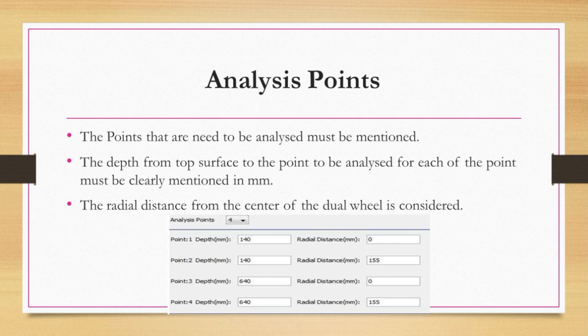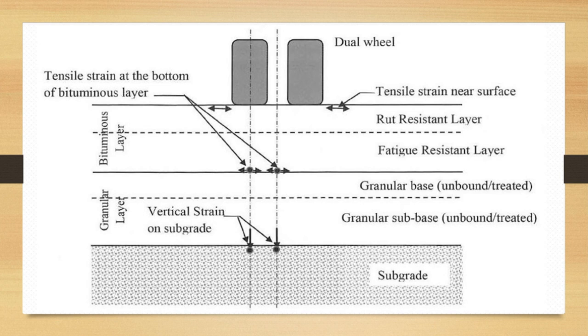The radial distances are measured from the center of the dual wheels. Let's see how 155 mm is considered in the following slide.